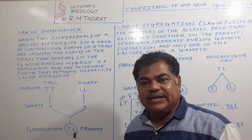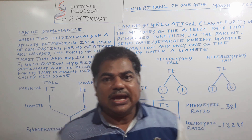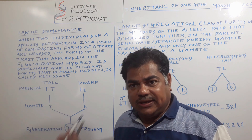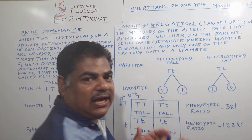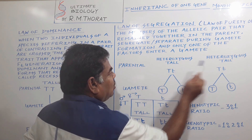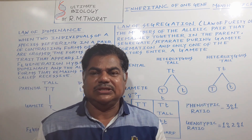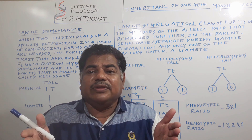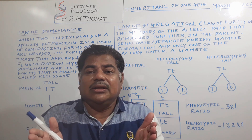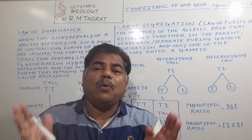In that F1 generation seed, one character is recessive and the other is dominant — that is the heterozygous tall. Mendel used those F1 generation seeds of the monohybrid cross for the F2 generation. He took those heterozygous tall F1 hybrids as parents — many plants, 10,000 to 20,000 — and let these heterozygous tall F1 hybrid plants self-pollinate with each other.